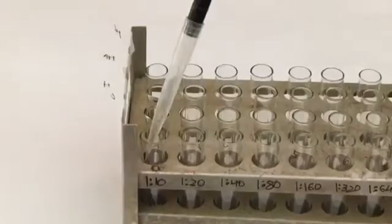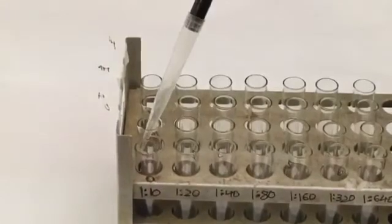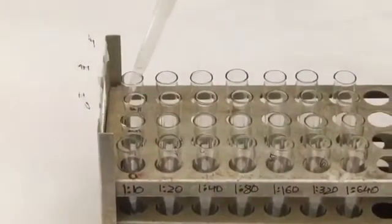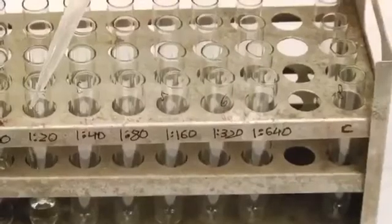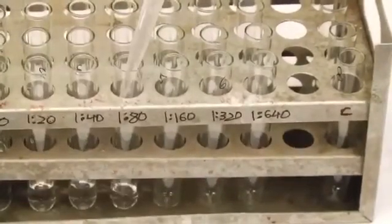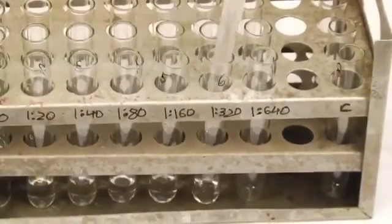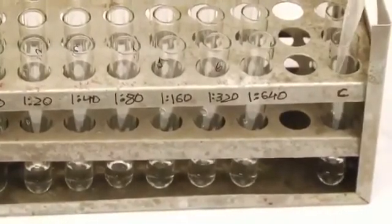Pipette 1.9 ml of physiological saline into tube number 1 of all sets. To each of the remaining tubes, that is 2 to 8, add 1 ml of physiological saline.